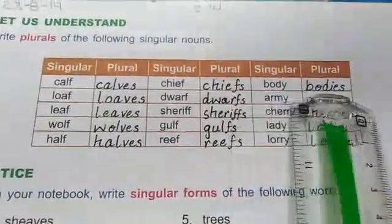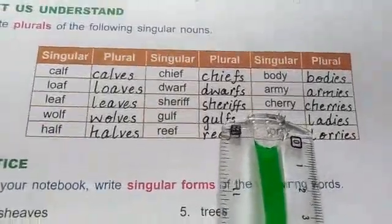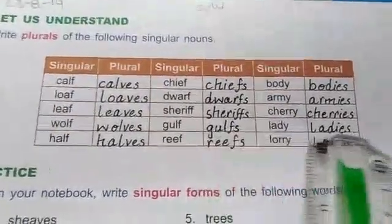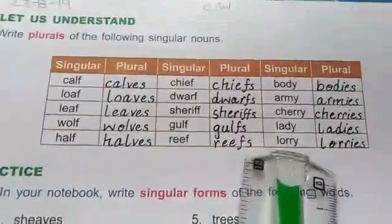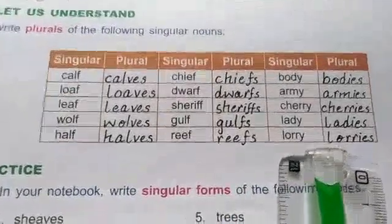Body — Bodies. Army — Armies. Cherry — Cherrys. Lady — Ladies. Lorry — Lories.